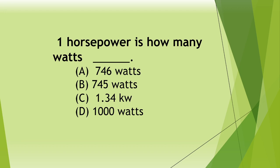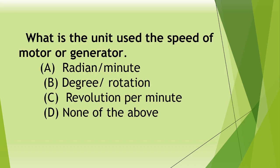Next question. One horsepower is how many watts? A 746, B 745, C 1.34, D 1000 watts. Answer: A 746 watts.